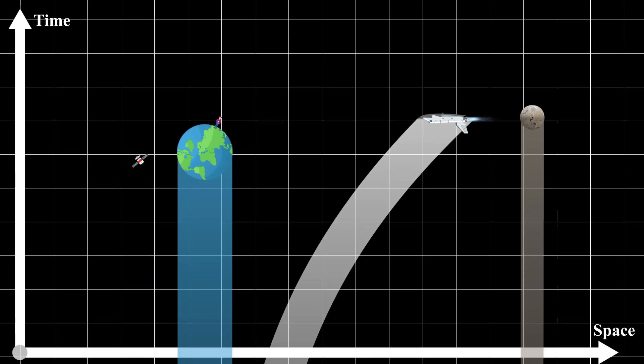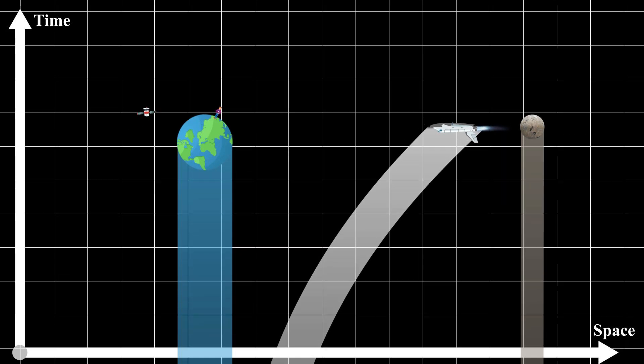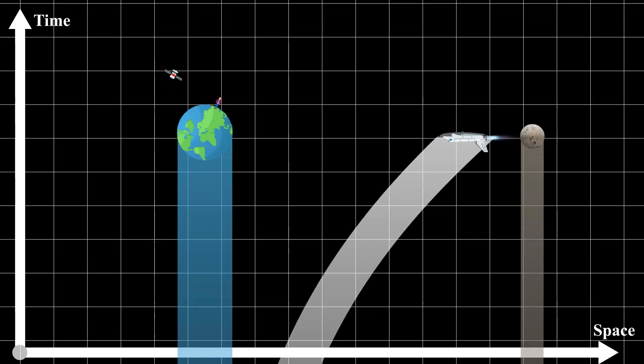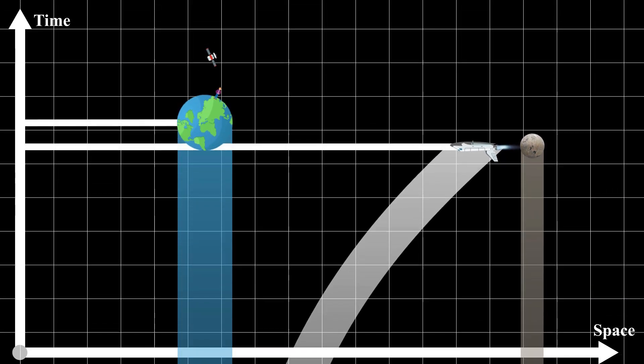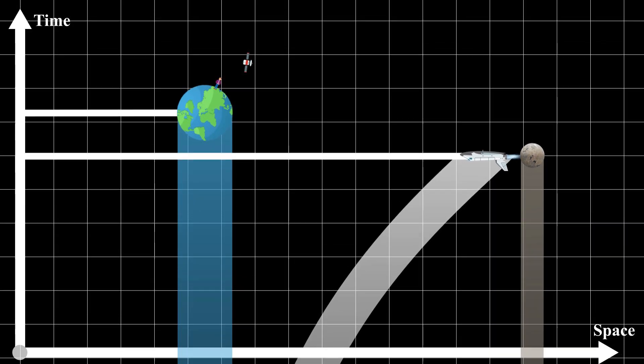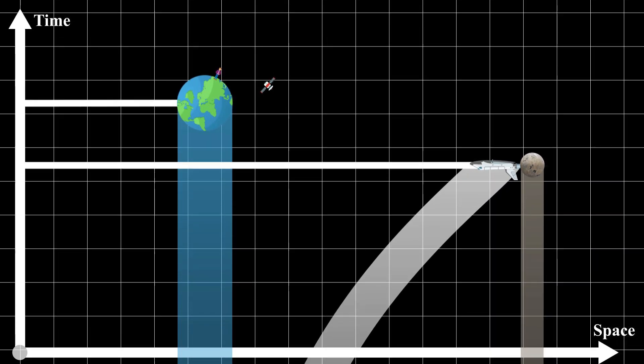The traveling twin must decelerate before landing on Proxima Centauri B. During this phase, the twin on Earth appears to age rapidly from the astronaut's perspective as Earth's clock seems to speed up.